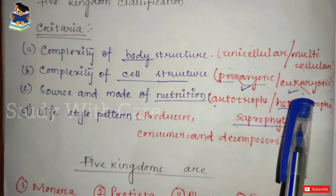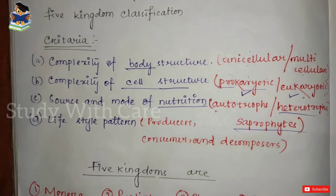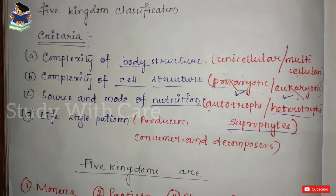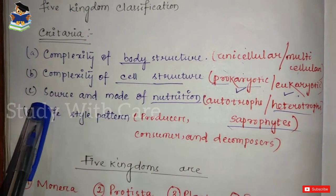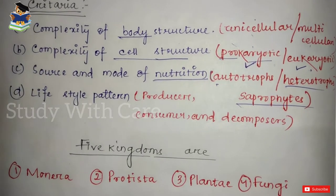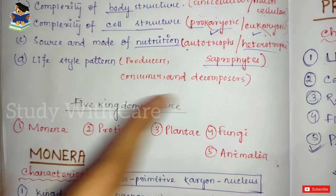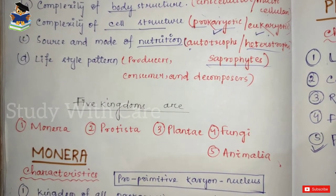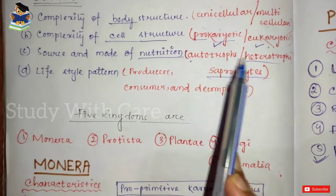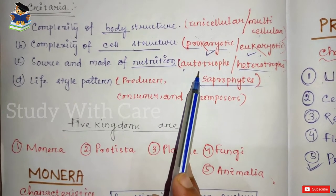Prokaryotic organisms are those which don't have a well-defined nucleus. Eukaryotic — 'eu' means true and 'karyon' means nucleus — so eukaryotic organisms have a well-defined nucleus. The next criterion was source and mode of nutrition.